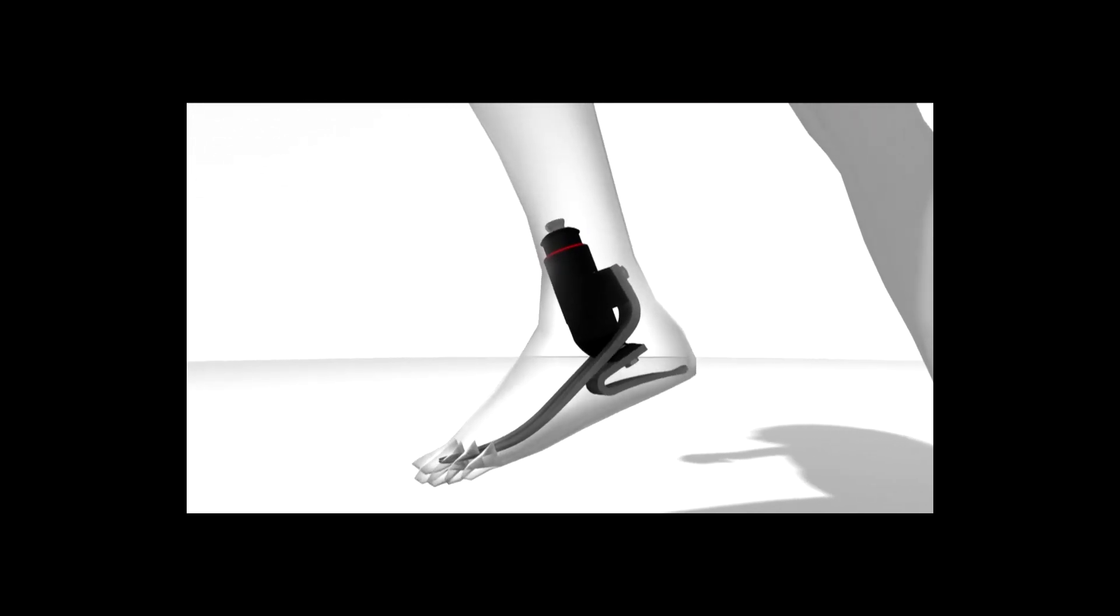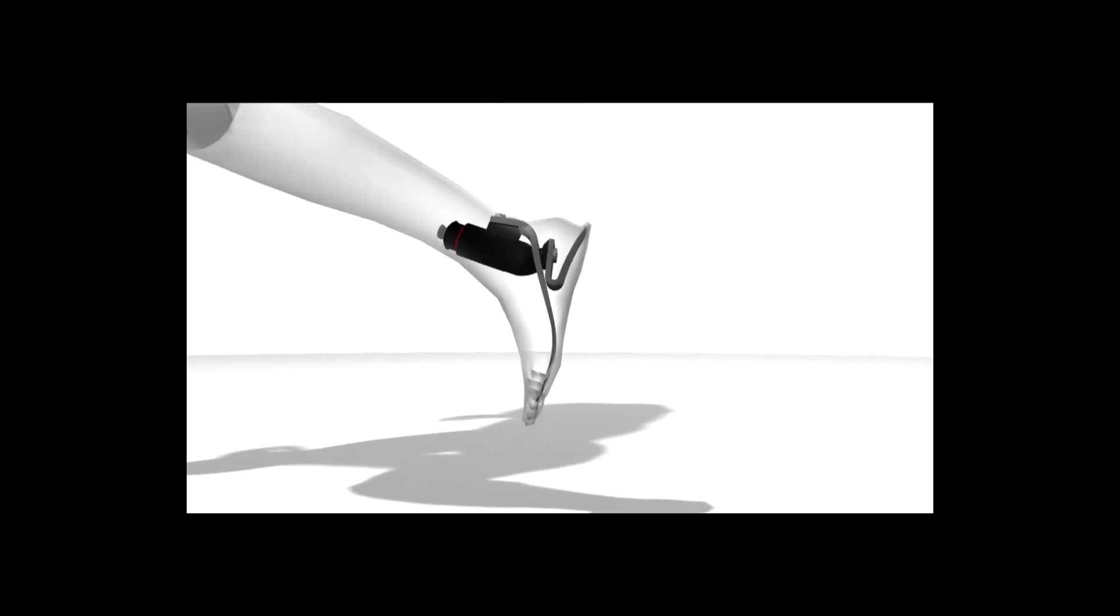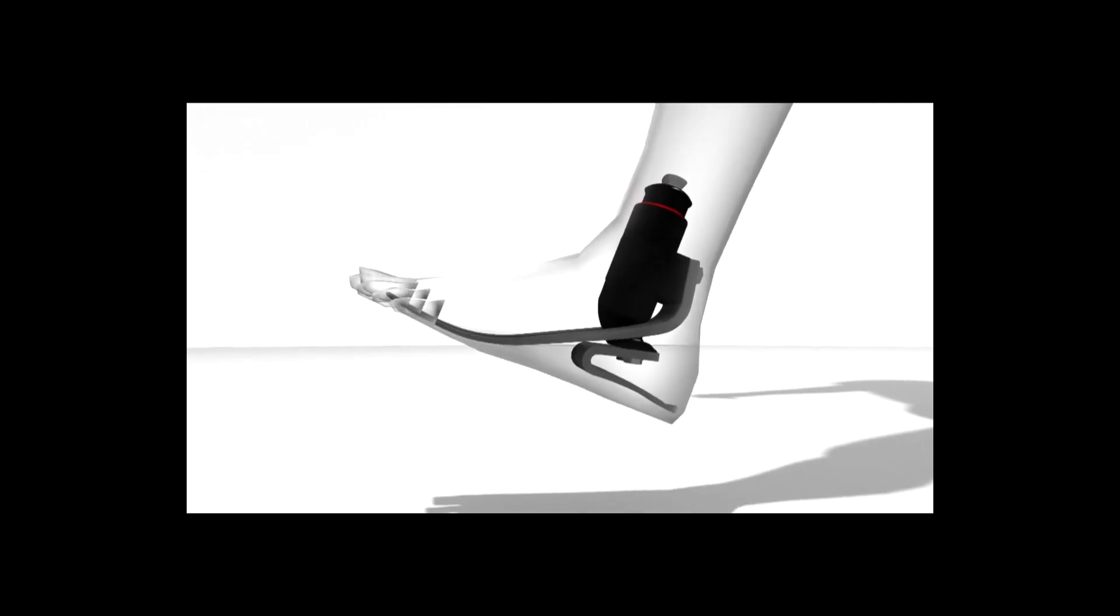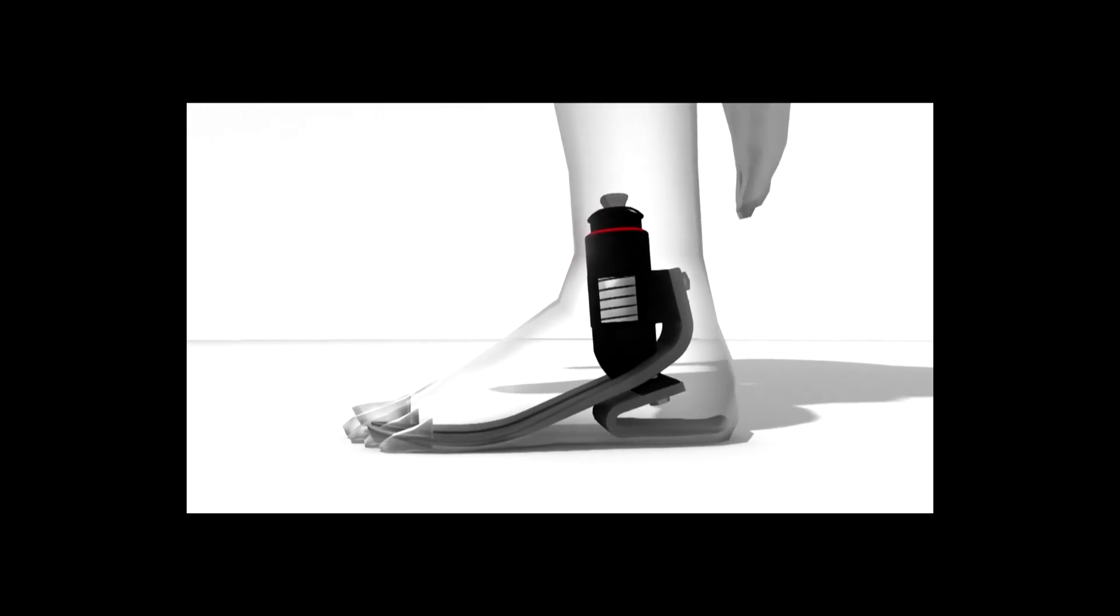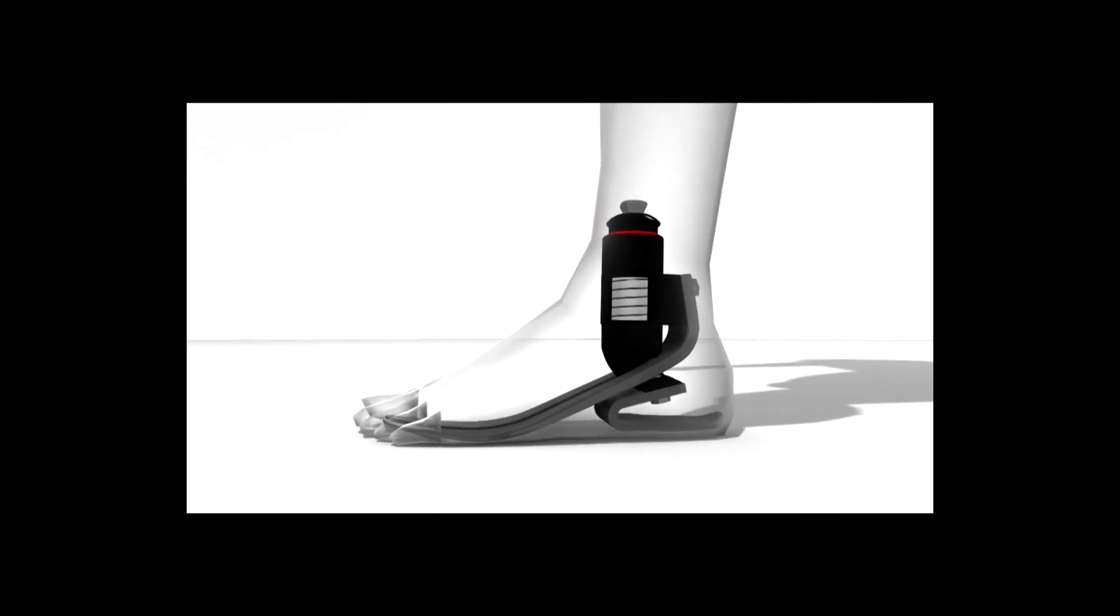As the heel hits the ground, the heel spring compresses. As weight transfers forward to mid stance, the heel spring extends. The axial spring tracks the ground reaction forces and assists knee extension, as the toe springs release energy for active toe-off.